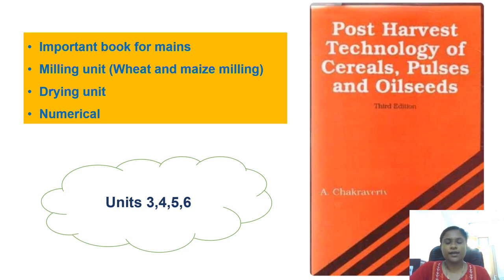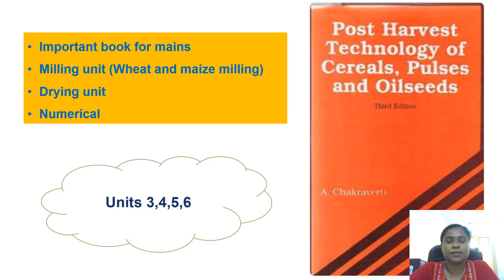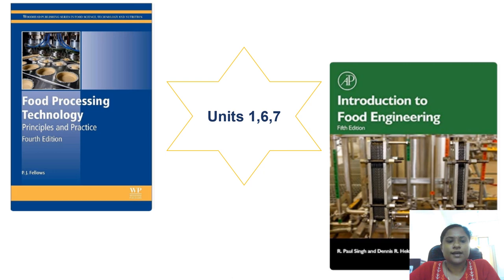In Chakravarti's book, concentrate more on the milling unit as well as the drying unit. For wheat and maize milling, you can read those chapters and solve the numericals from this book. Some parts of Units 3, 4, 5, and 6 can also be covered using this book. The next books are 'Food Processing Technology: Principles and Practices' by P.J. Fellows and 'Introduction to Food Engineering' by Paul Singh. Some portions of Units 1, 6, and 7 can be covered using these books.